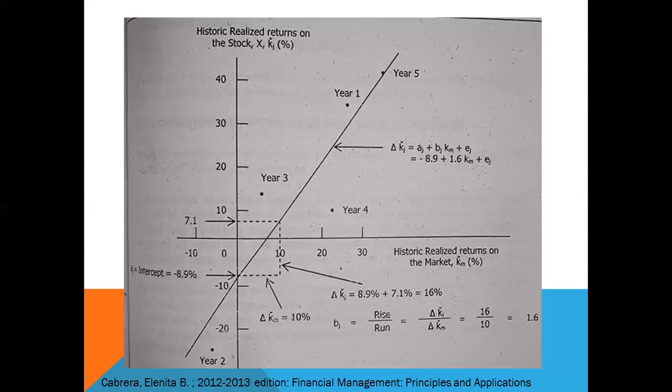Our beta here is 1.6, so what does that mean? As defined from our previous video, if the beta is 0.5, the stock is only half as volatile or risky. If the beta is 1.0, the stock is of average risk. If the beta is 2.0, the stock is twice as risky as the average risk. So our beta here is 1.6, so that's more close to 2, which is very risky. The stock here is actually risky.